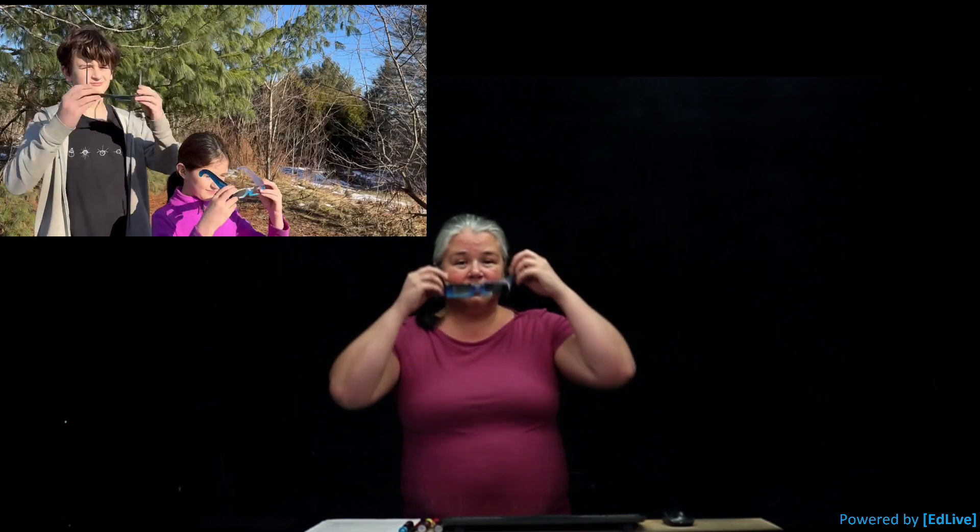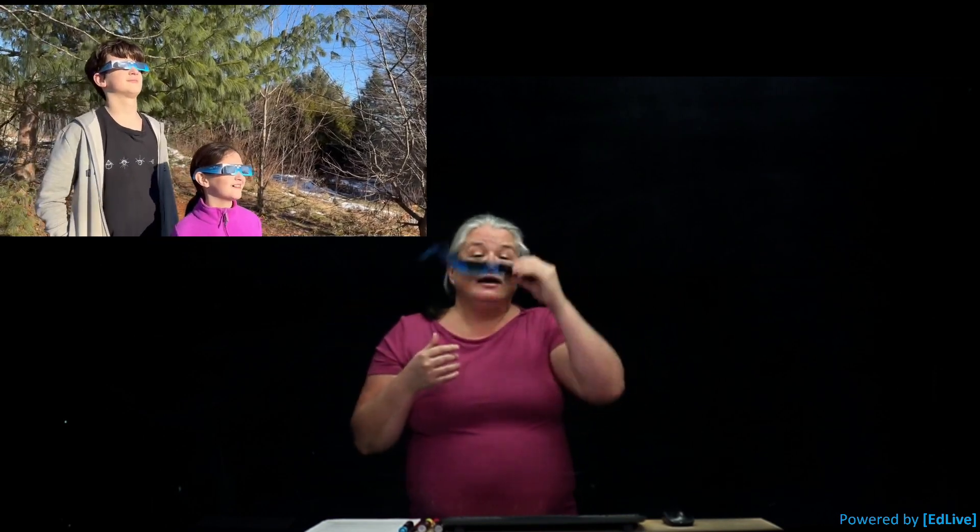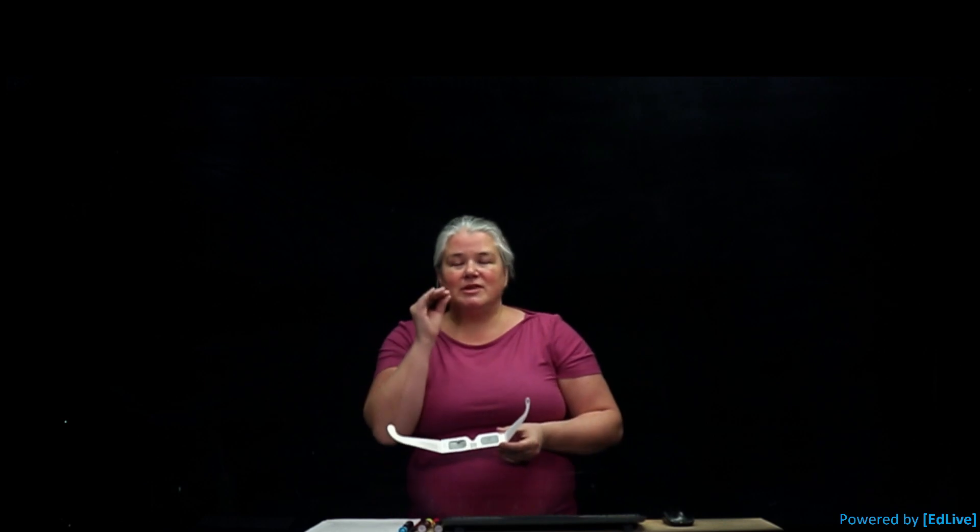So to observe the eclipse, you simply put them on and you look up. Now if you don't have eclipse glasses, there are different ways to observe the Sun indirectly using what we call the projection method. But the important thing to remember is never to look at the Sun directly without your eclipse glasses.